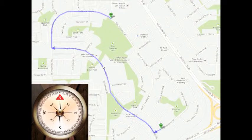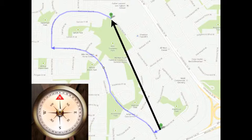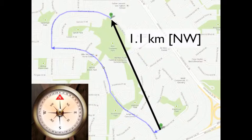Now we are going to find our displacement. We draw a line from A to B, find its length, and then add a direction. We find that to be 1.1 kilometers northwest — it has a magnitude of 1.1 kilometers and a direction of northwest.